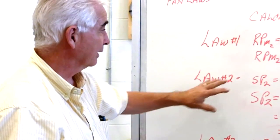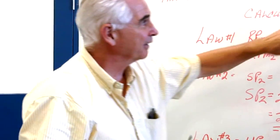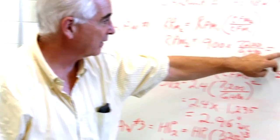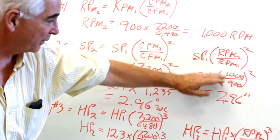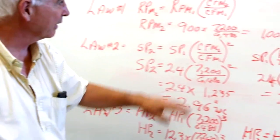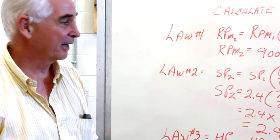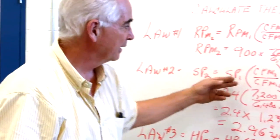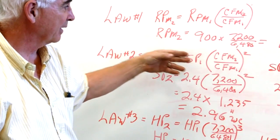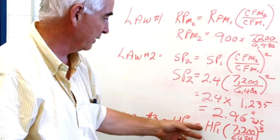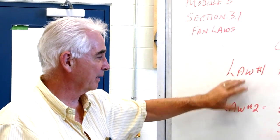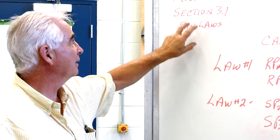Both are correct, but personally I stay with whichever ratio I started with — CFM or RPM — to avoid carrying forward a calculation error. Since RPM varies directly as CFM, you can use either ratio for Laws 2 and 3. That's a quick explanation of Fan Laws 1, 2, and 3. You'll see more in Section 3.1 of Module 3. I always draw a little picture — it helps.